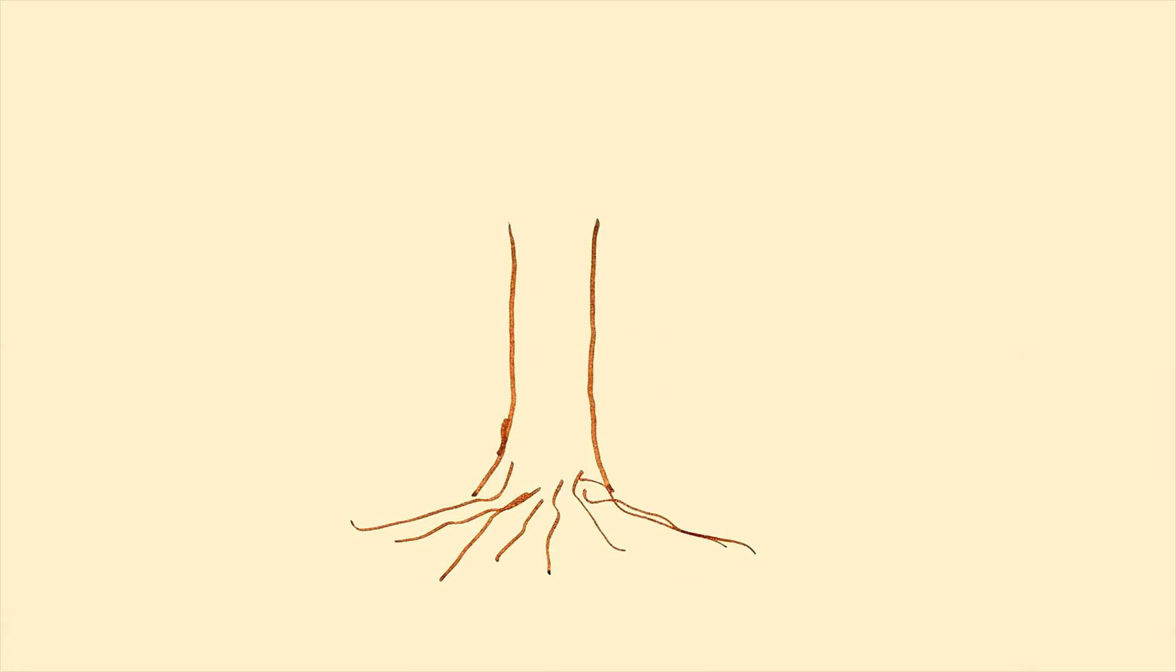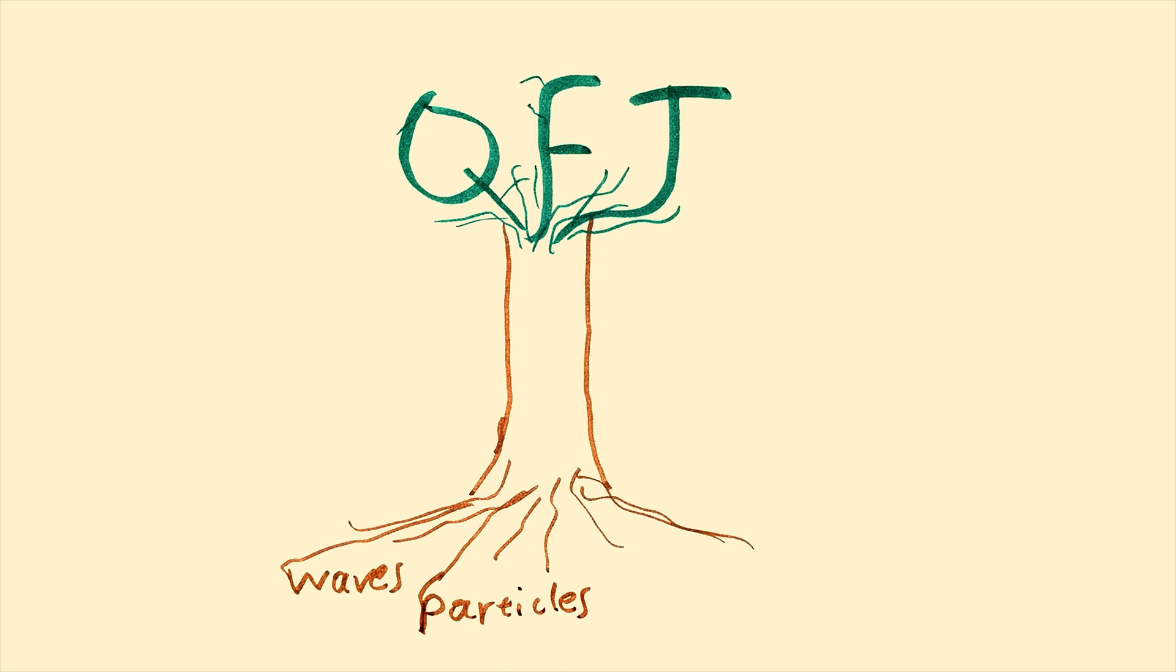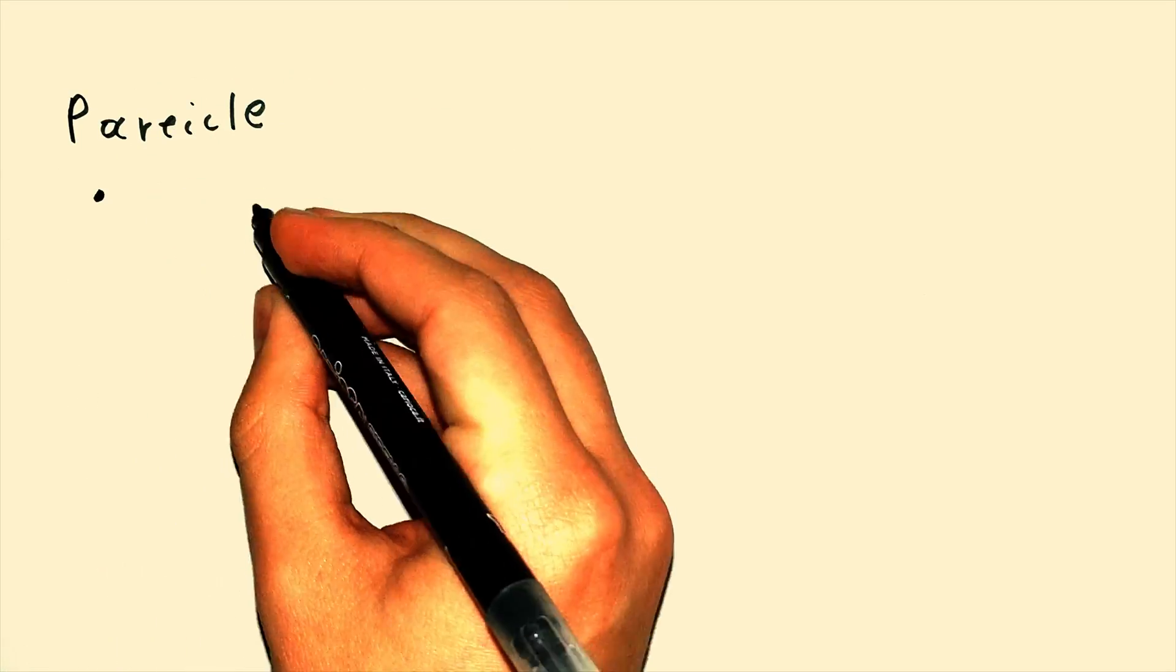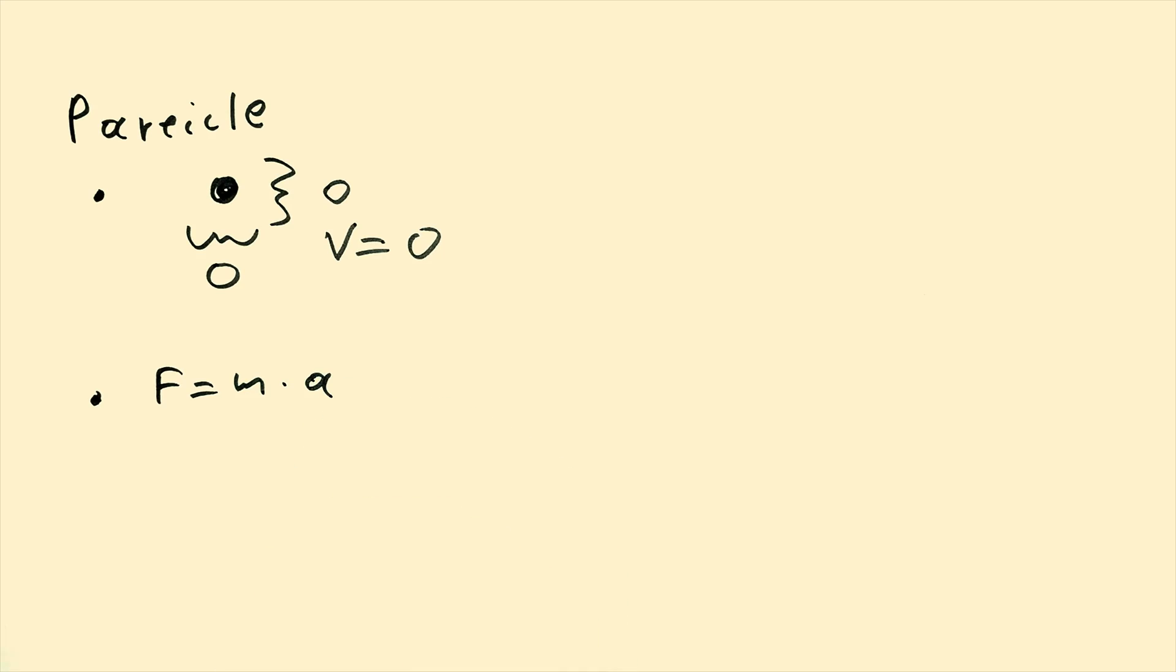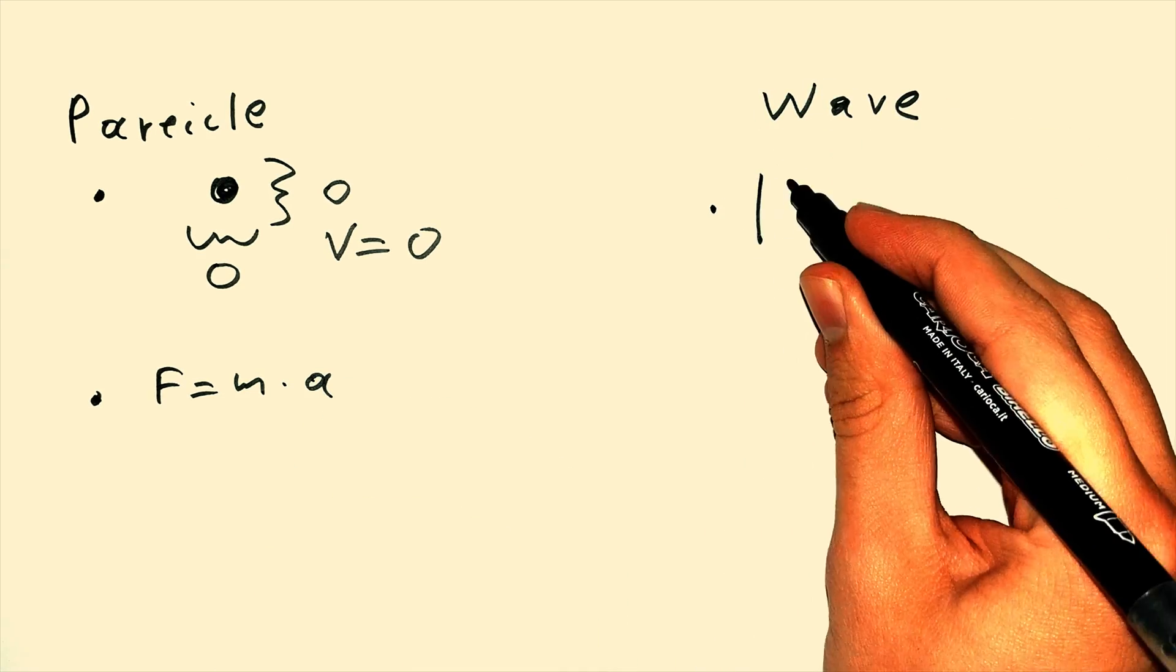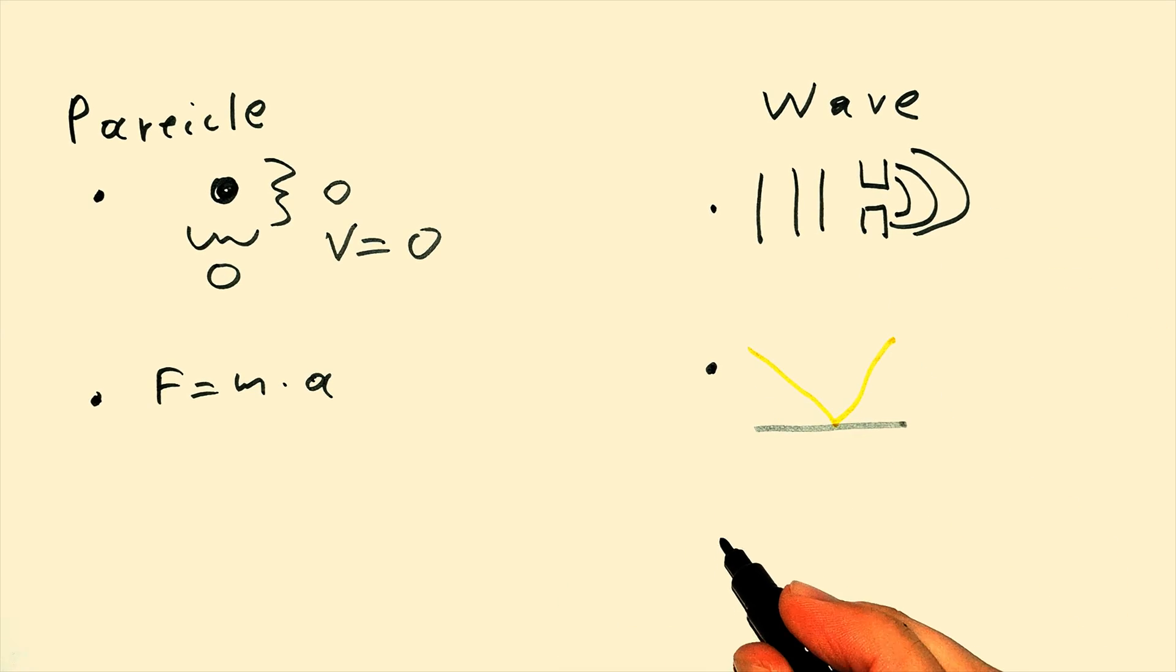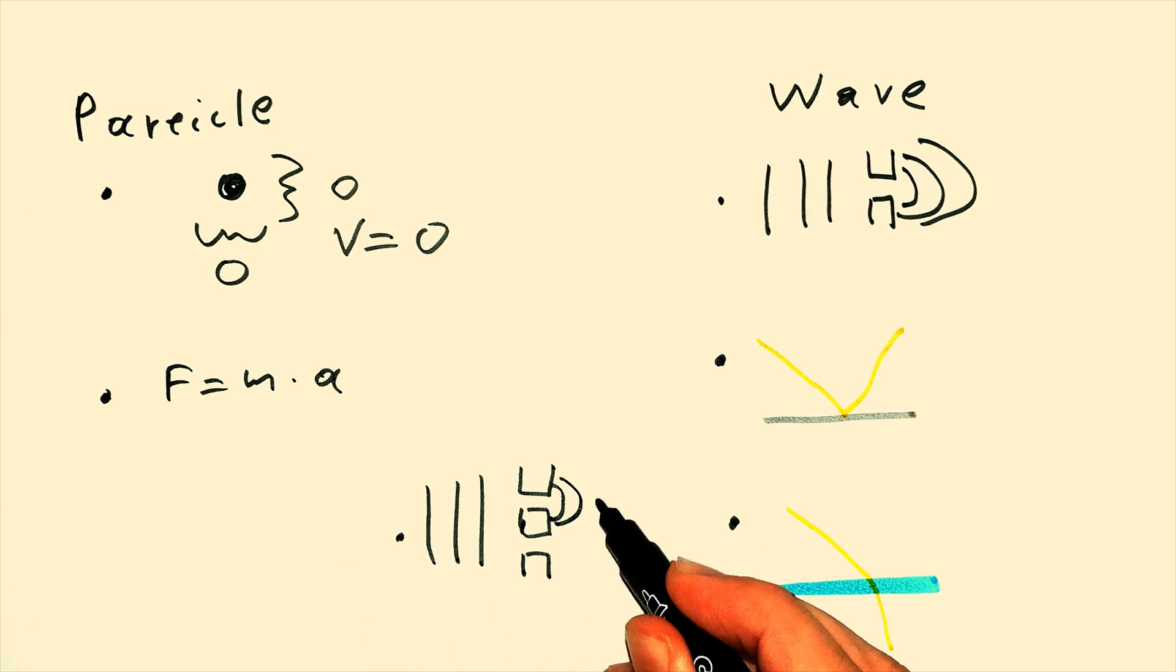The roots of quantum field theory have something to do with waves and Newtonian particles, as well as special relativity. In classical physics, a particle is something which has no size and it obeys Newton's laws of motion. A wave, on the other hand, in classical physics, diffracts when it passes through a slit, gets reflected when it encounters a surface, refracts when it changes the medium it passes through, and it interferes with other waves.